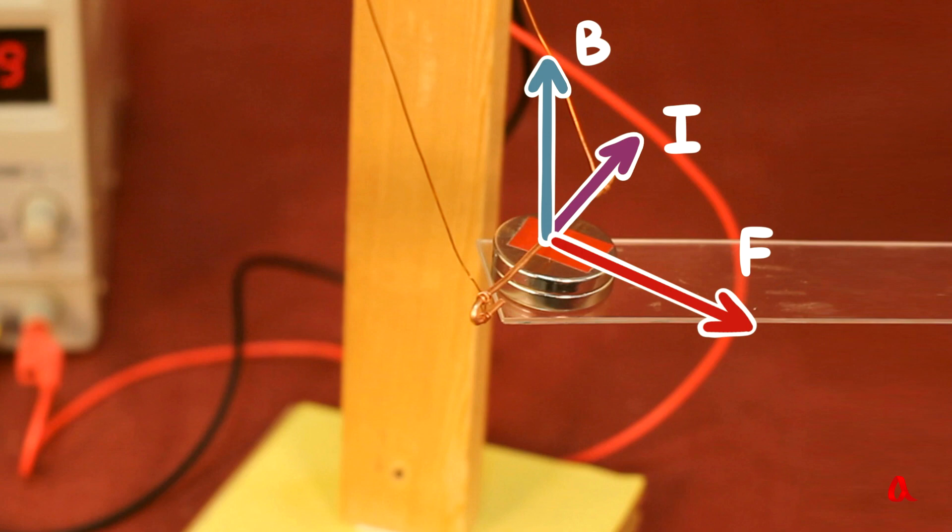If the direction of the current and the magnetic field are known, the direction of the Ampère force can be determined by the Gimlet rule. If the Gimlet is rotated in such a way that its handle is turned from the direction of the current to the direction of the magnetic field, the Gimlet moves in the direction of the Ampère force.